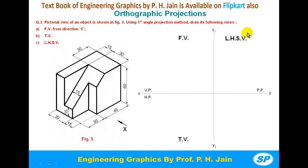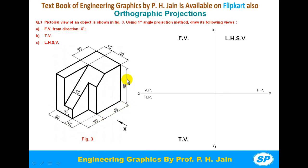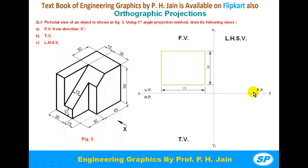On the profile plane we will draw the left hand side view. We have finalized the areas for each view. Next, we construct rectangular boxes in each view. Looking at the object from the front, the overall dimensions are: length = 30 + 45 = 75 mm, and height = 60 mm. So in the front view we construct a rectangular box of 75 mm length and 60 mm height, choosing a convenient distance from the XY line.